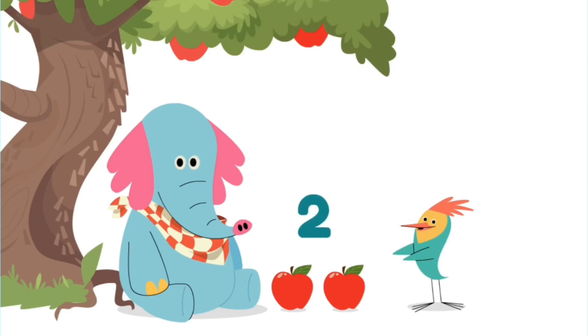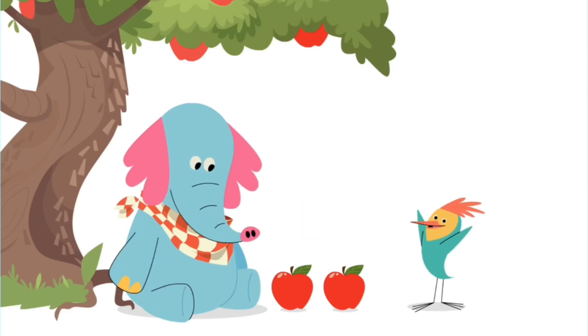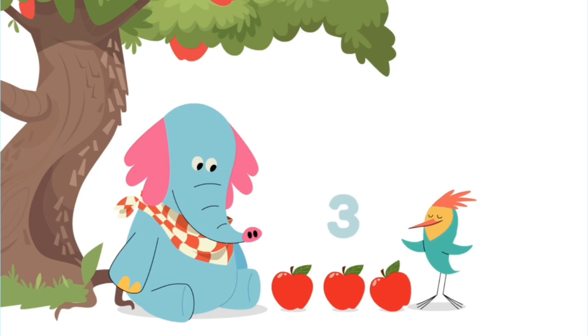O-O has two red apples for snack. Then he gets one more. Now O-O has more apples. He has three.